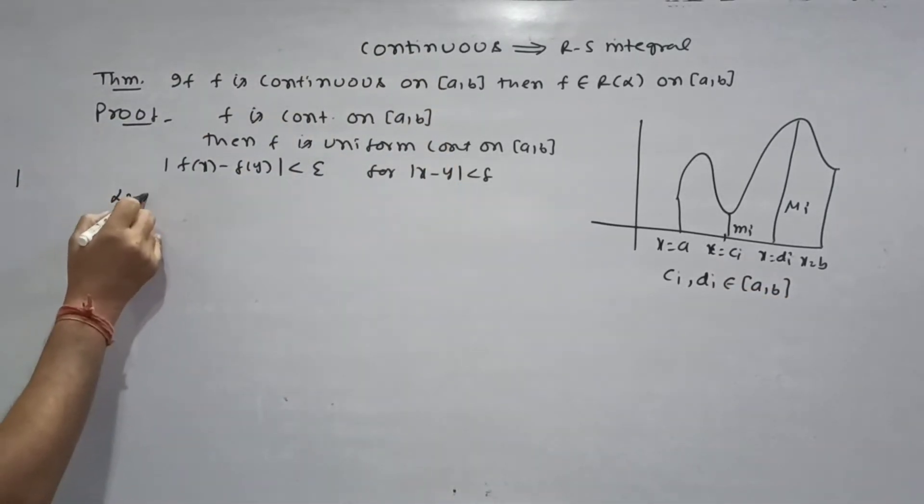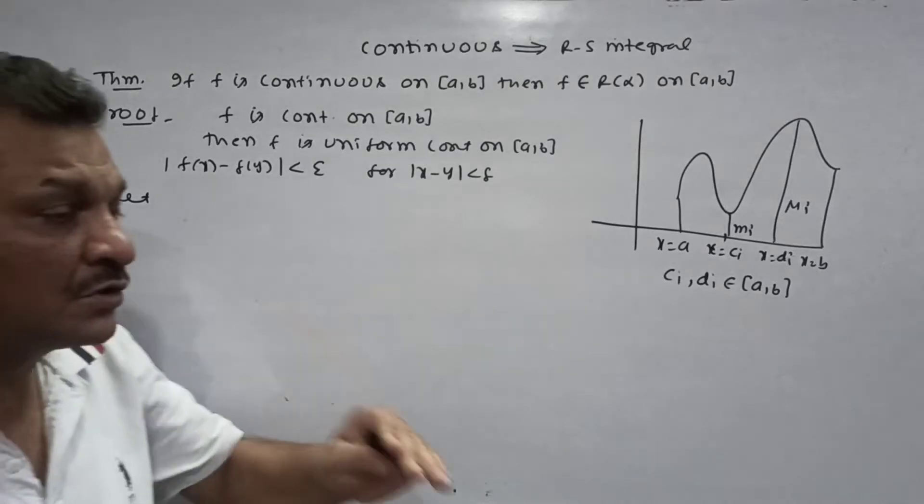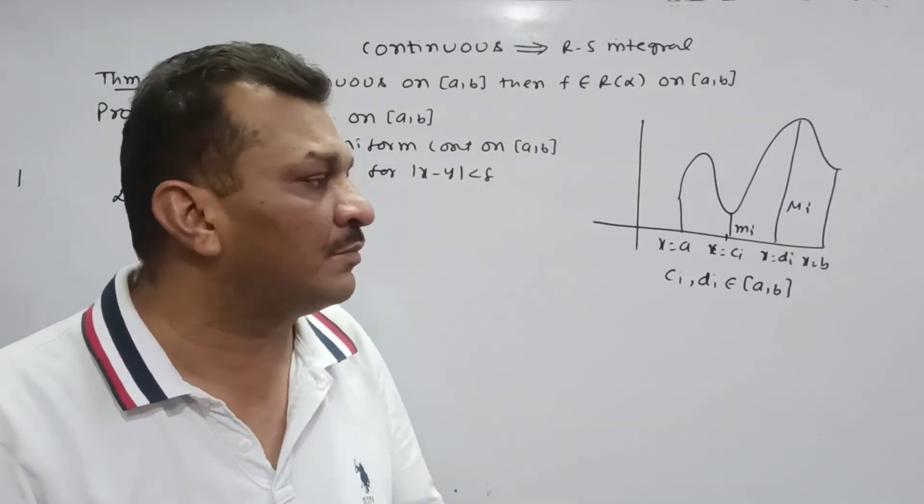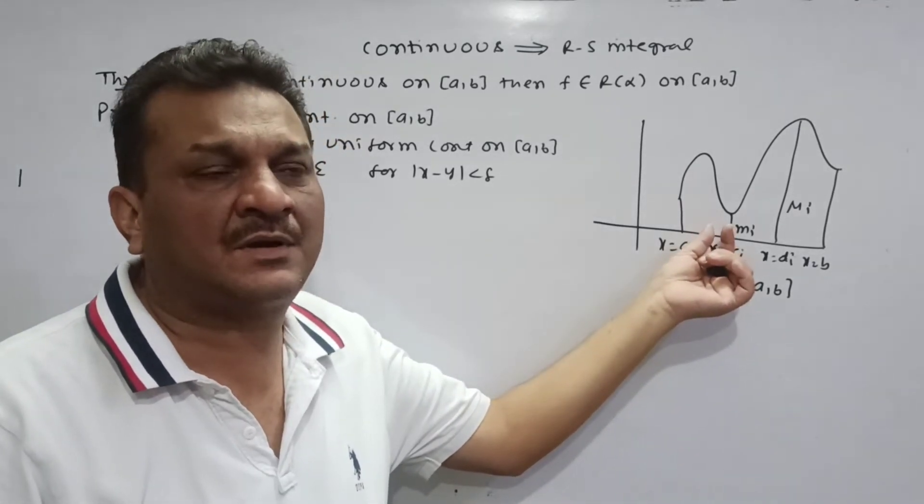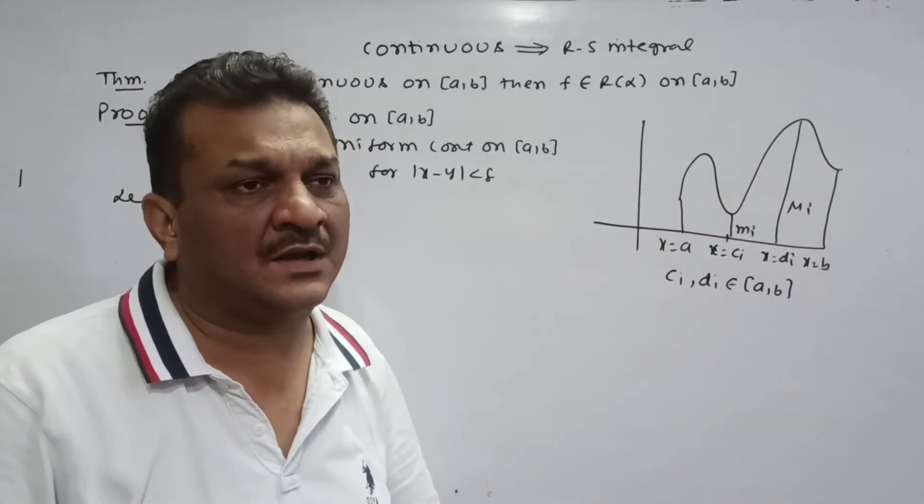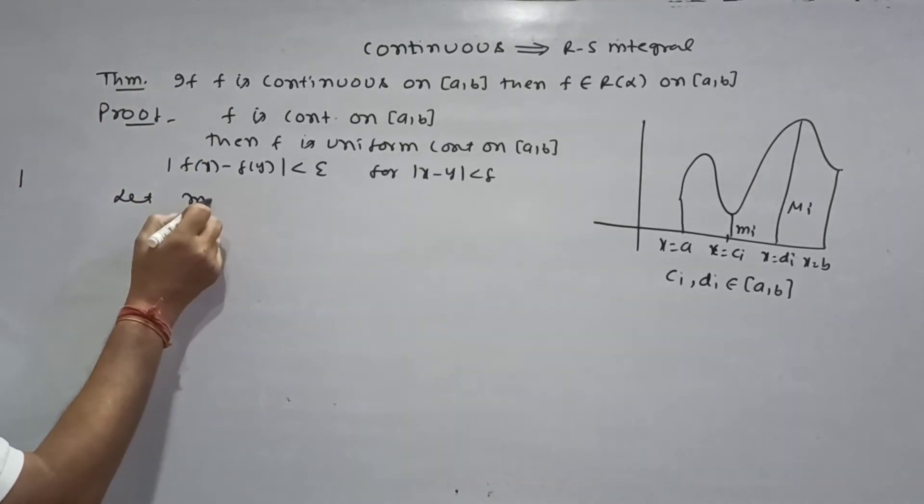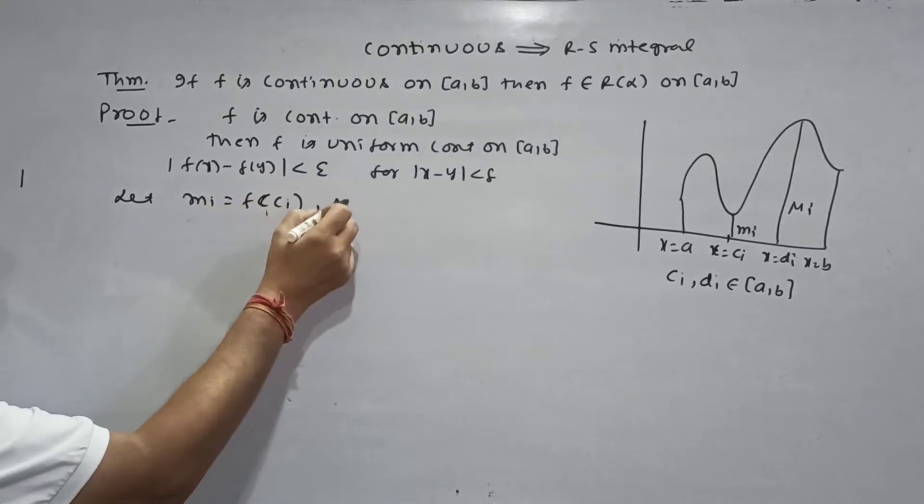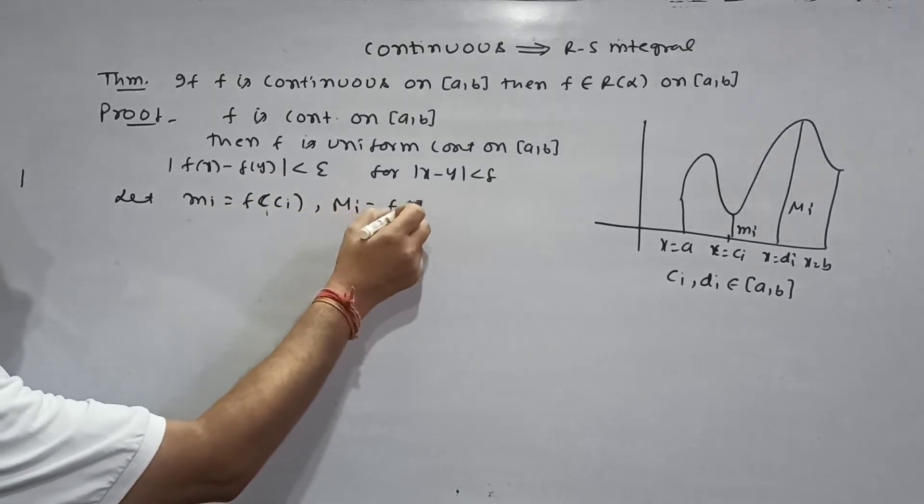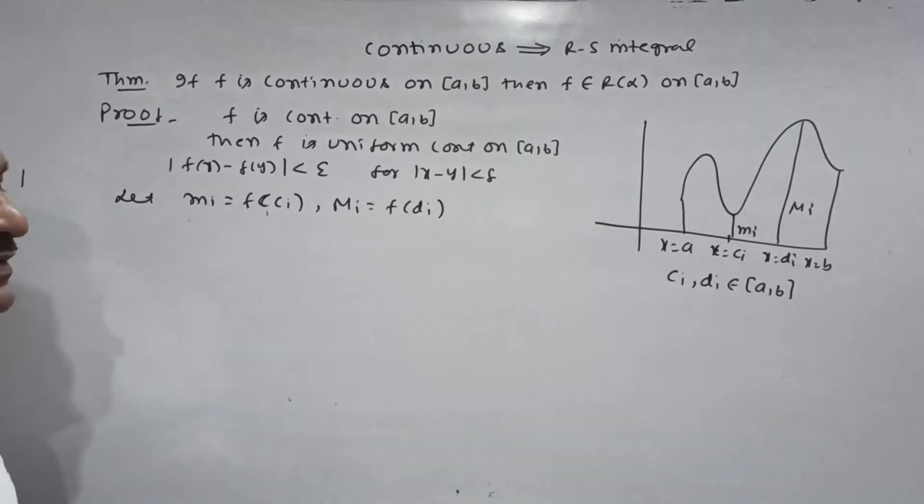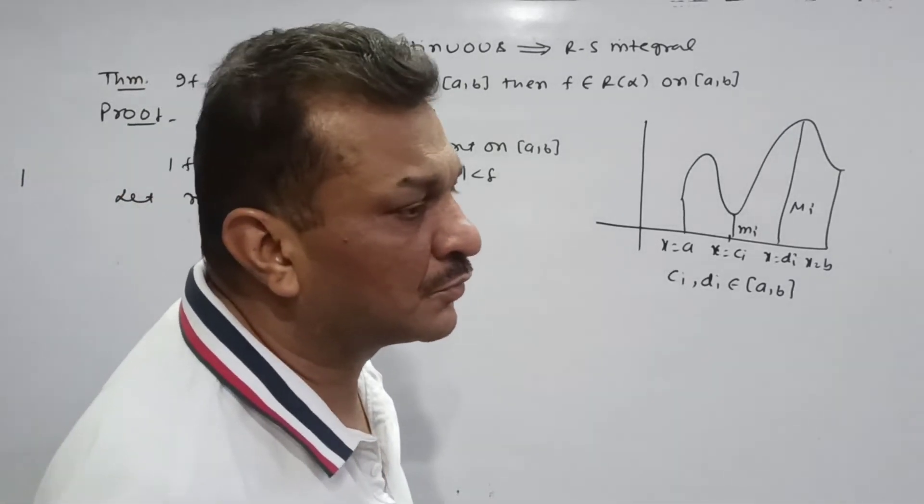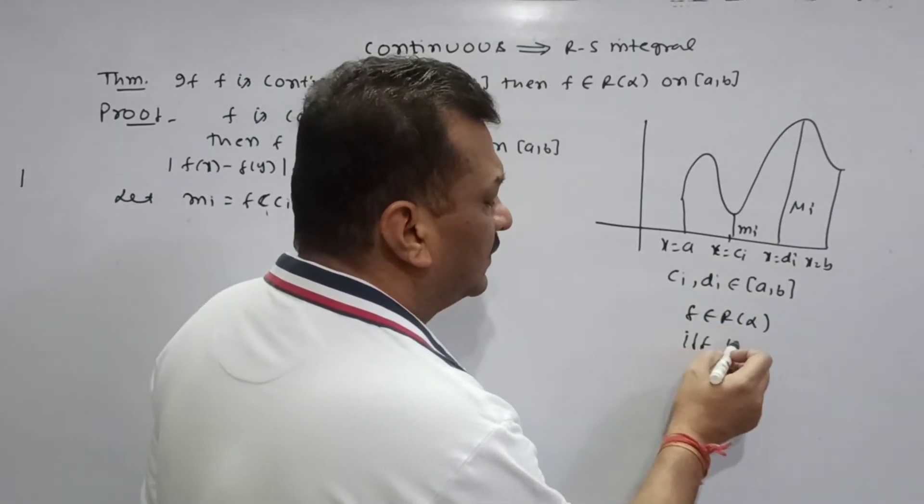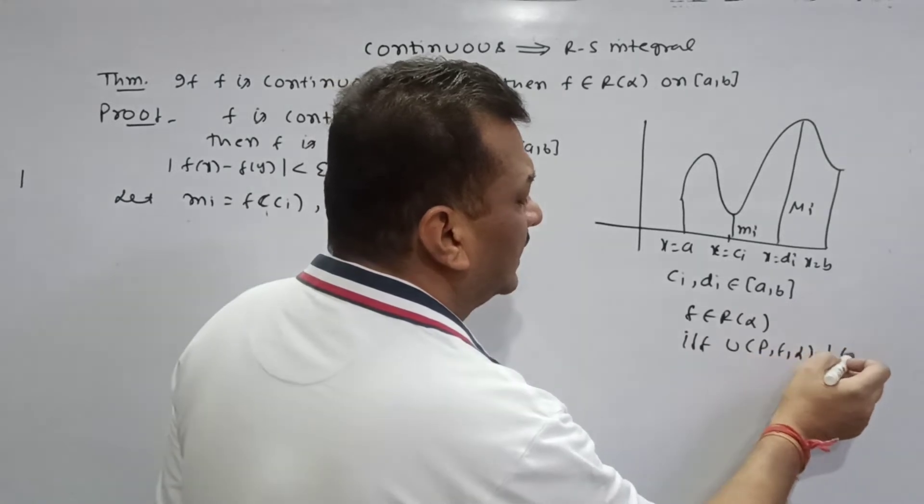Function continues at closed interval, upper bound and lower bound. Let small mi equal f of ci, and capital Mi equal f of di.